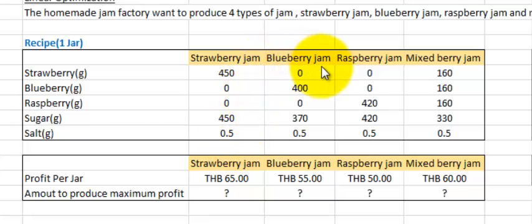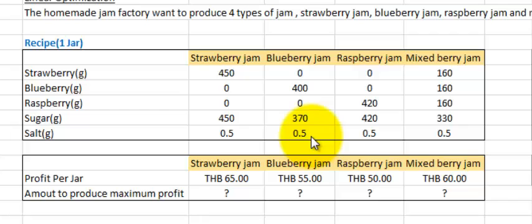For the blueberry jam, it takes 400 grams of blueberry, 370 grams of sugar, and 0.5 grams of salt.